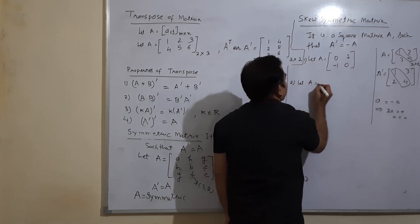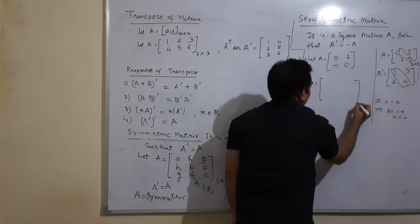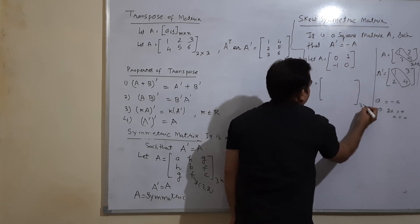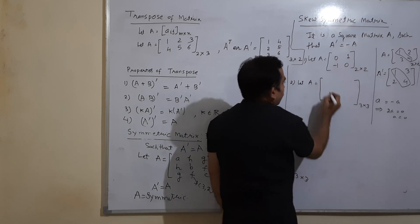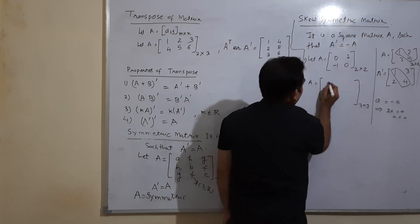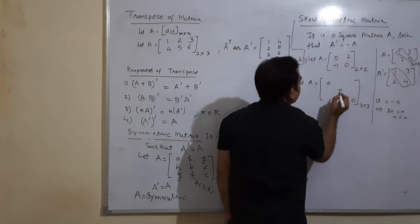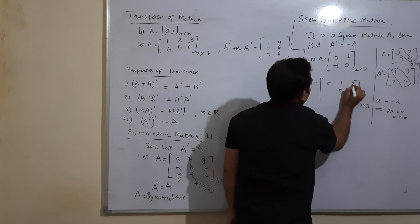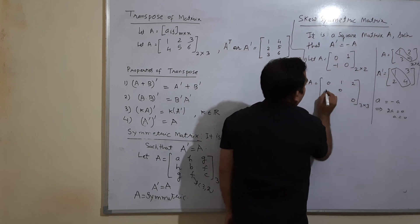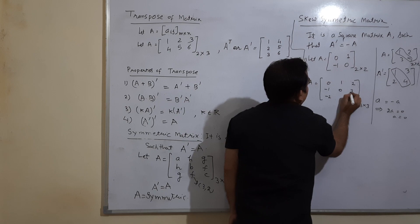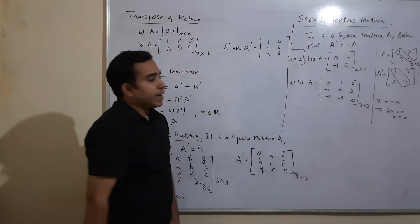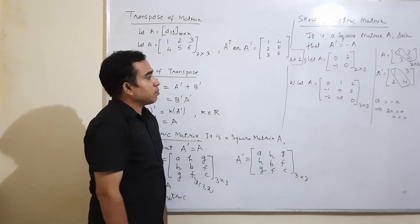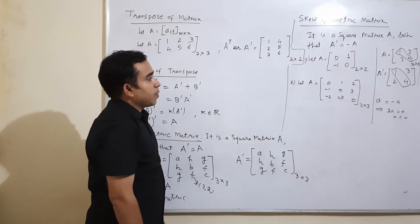For a 3×3 skew symmetric matrix, place zeros on the diagonal. Suppose the entry at position (1,2) is 1 and at (1,3) is 2; then the corresponding entries must be −1 and −2. If another entry is 3, it should be −3 in the symmetric position. You can verify that Aᵀ = −A for such a matrix.